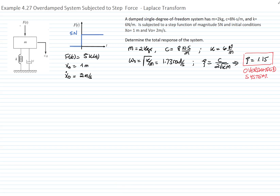We also have initial conditions: the initial displacement equals 1 meter and the initial velocity equals 2 meters per second. The equation of motion of this system is mass times acceleration plus damping constant times velocity plus spring constant times displacement equals the external force applied.